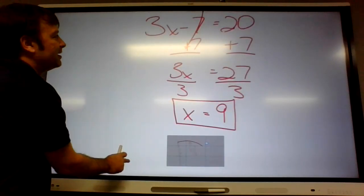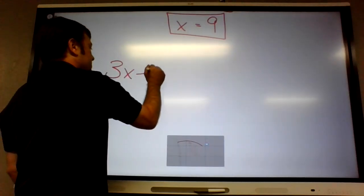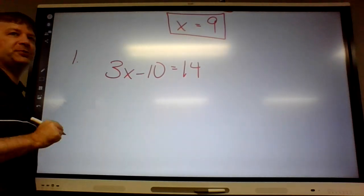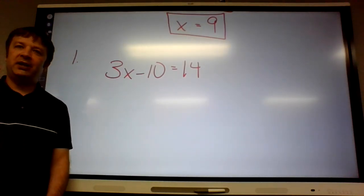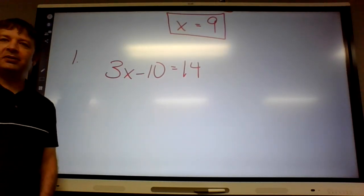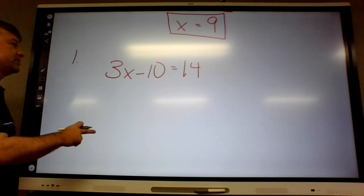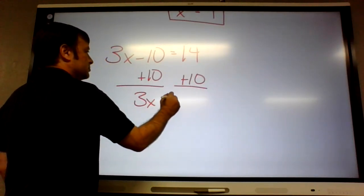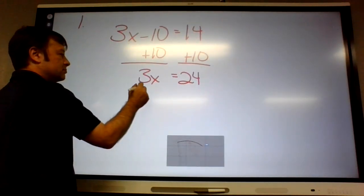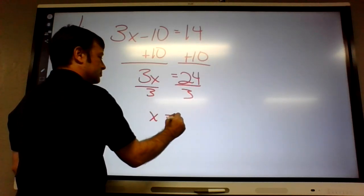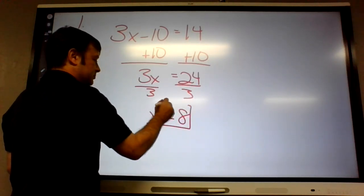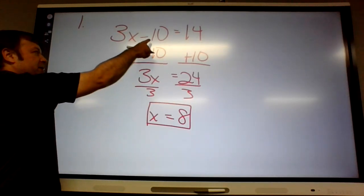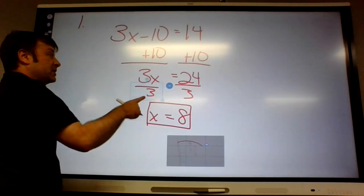3x minus 10 equals 14. Okay who wants to go first? We'll go Rain. What do I do? Add 10. And then you get 24. And then you have to divide it by 3, and then you get 8. So she added 10 to get rid of minus 10, divided by 3 to get rid of times 3.